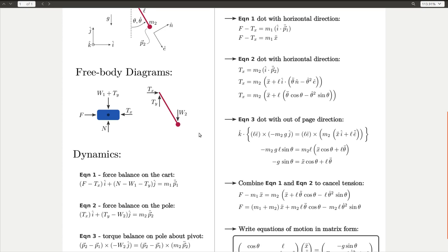The next thing is to just do that same procedure on the second equation for the pole. And what you find here is a very similar looking thing, except we have p2 double dot.